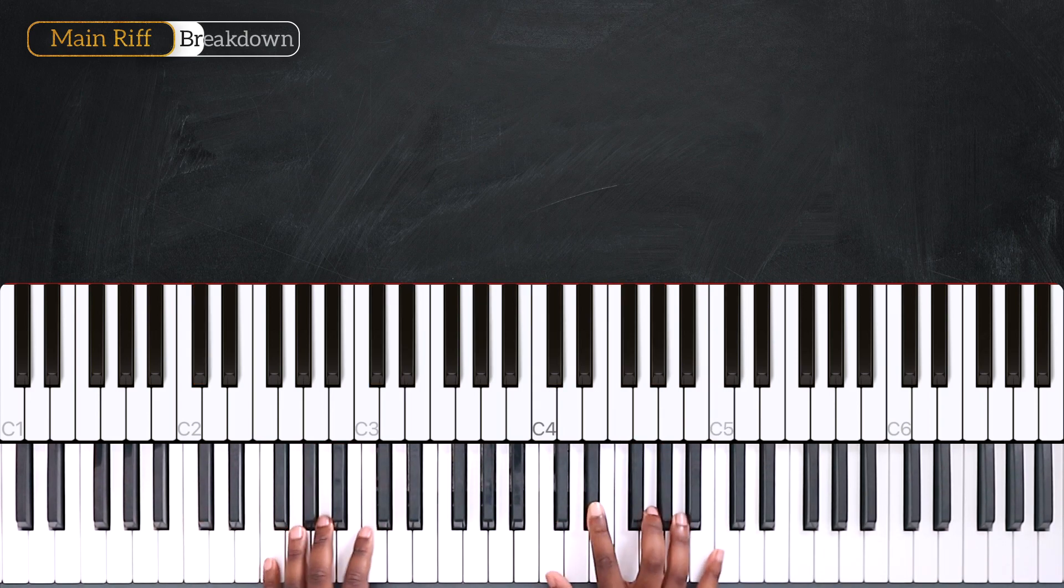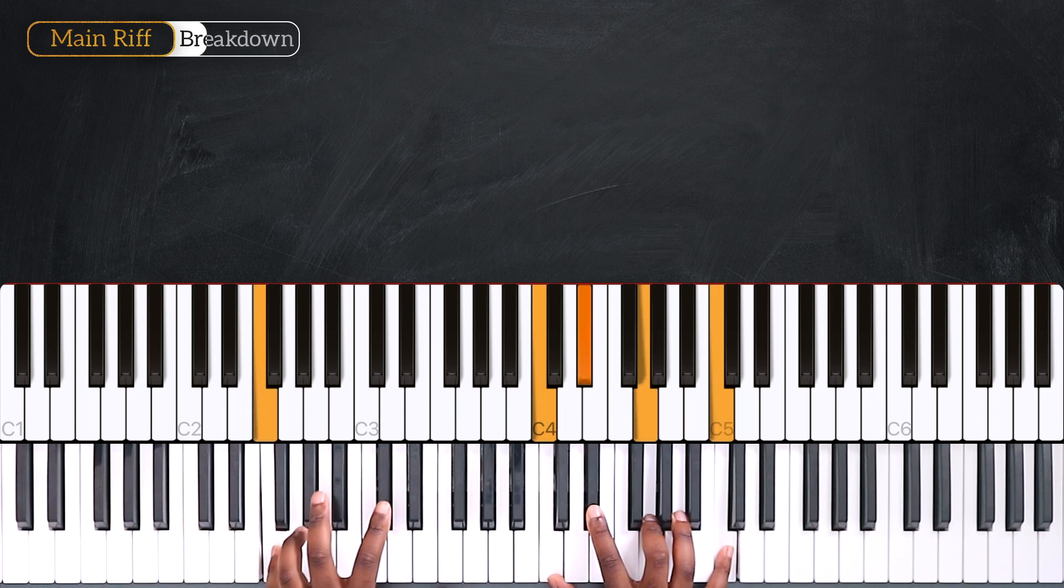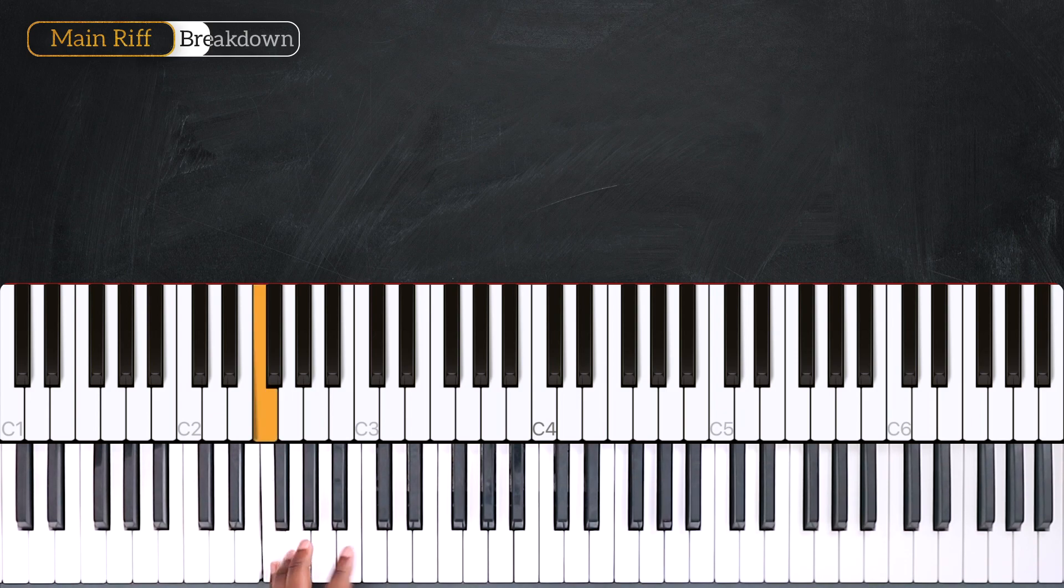I'm starting by playing the notes on my right hand for F minor twice. And on my left, I'm playing F on the first beat, then Ab, followed by C.